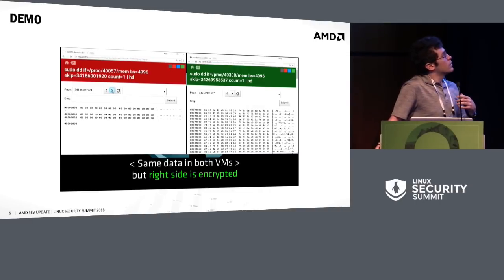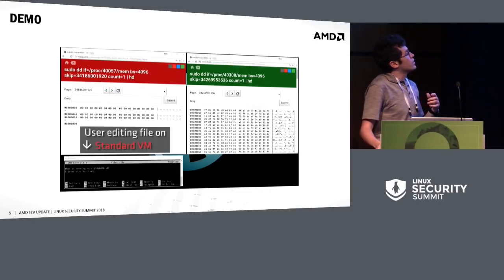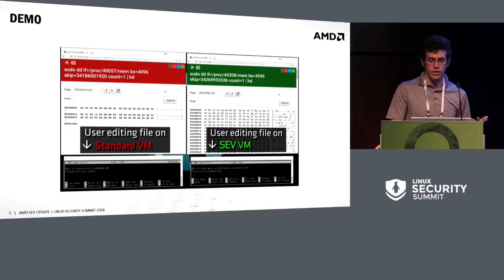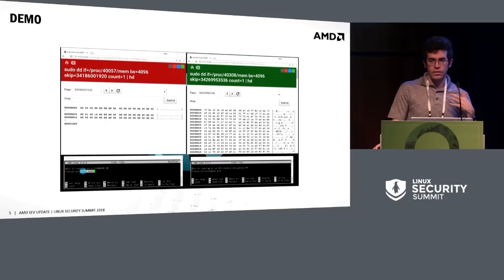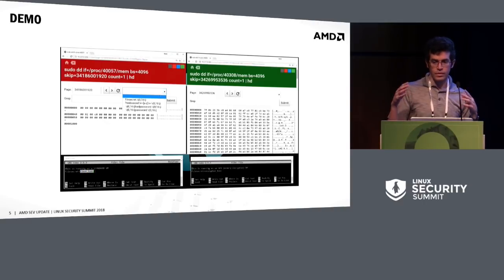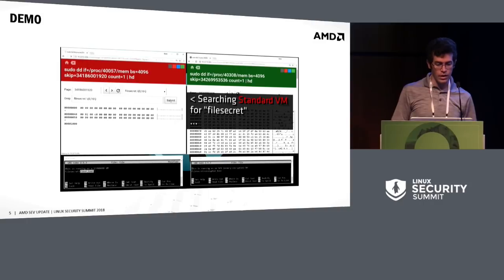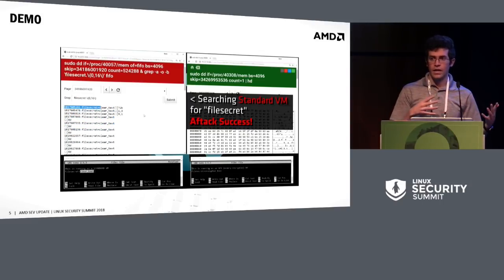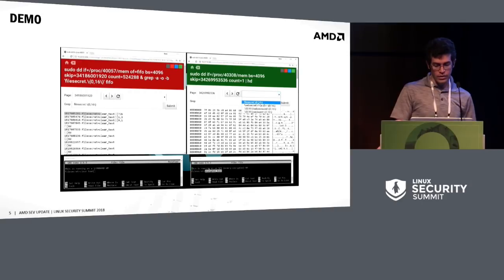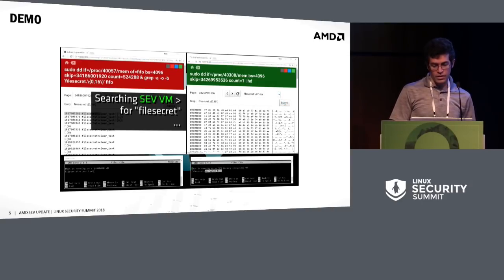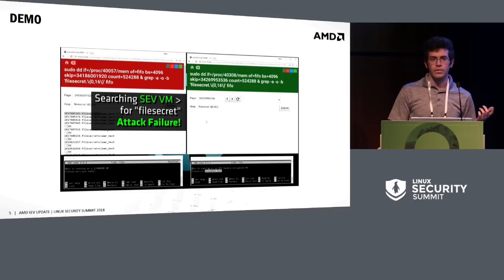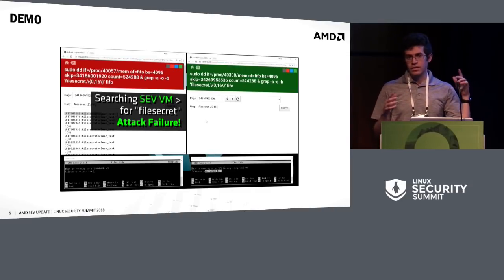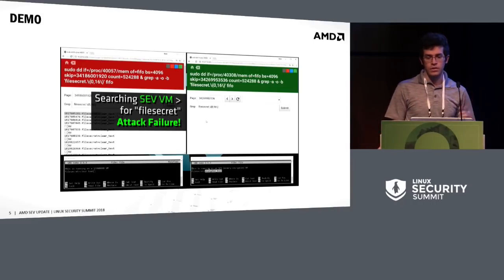Next, the demo shows a text editor — a user editing a file in that VM, sitting in memory, not yet written to disk. The admin user on the native box does a grep command on the memory. On the left side, the unencrypted VM, it's very easy to find the text in the file. When they do the same thing on the right side with the SEV-enabled VM, they find nothing. This is about as exciting as a security demo gets. This is a 2 GB RAM guest, and as you can see, it's pretty easy to do and pretty fast.